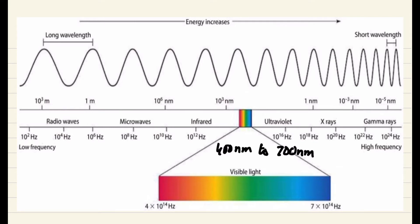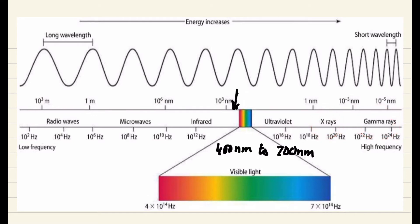So on one side we will have 700 nanometers, and on the other end we will have 400 nanometers. Then comes the ultraviolet waves, they have lesser wavelength than the visible light rays, then the X-rays, and then we have the gamma rays. That's how the wavelengths decrease as we move from left to right.